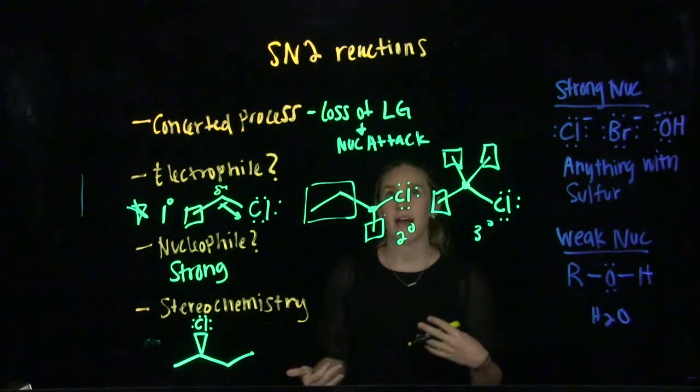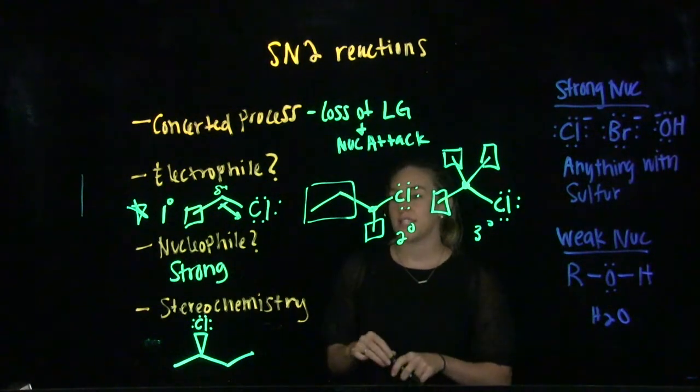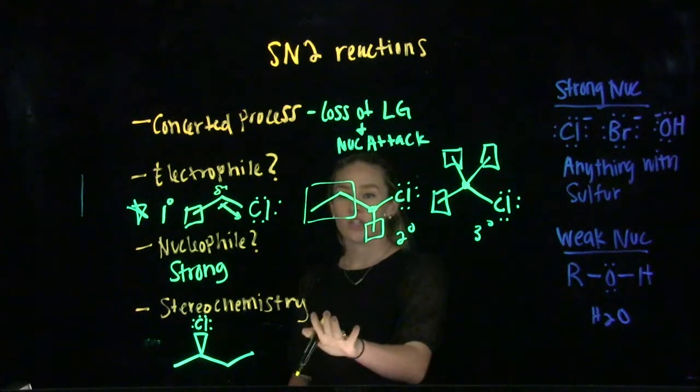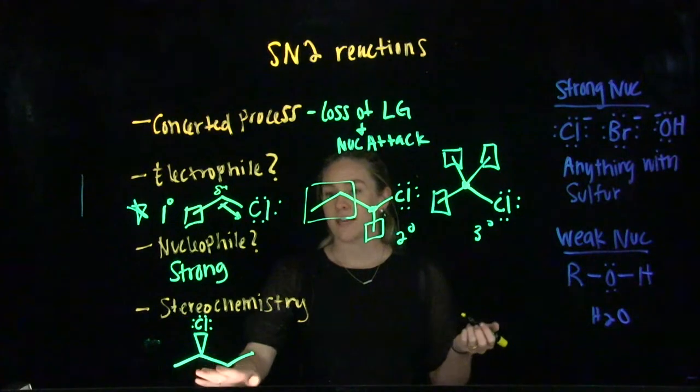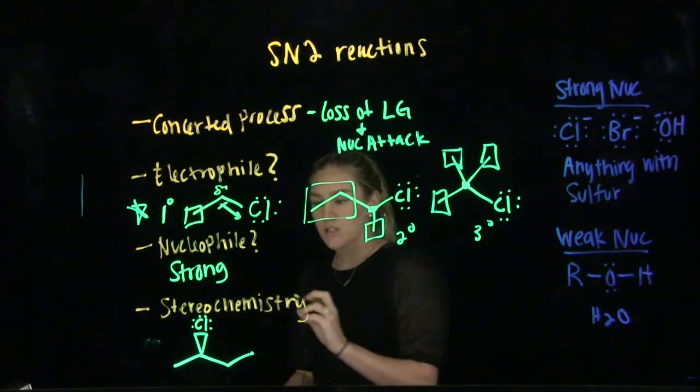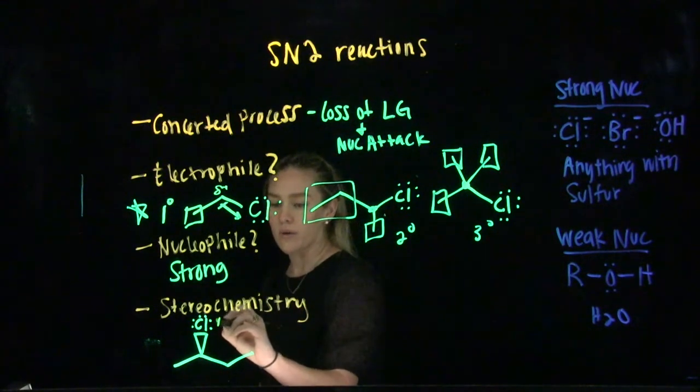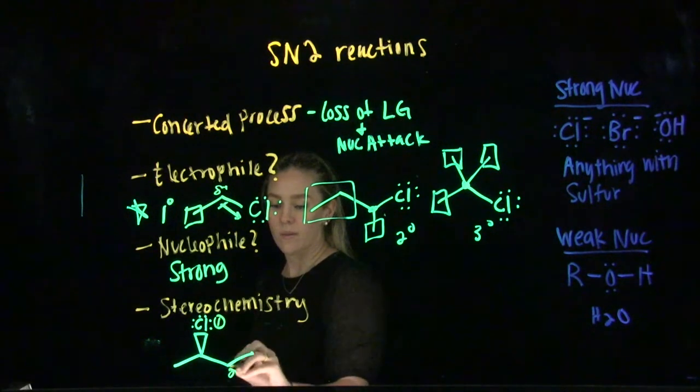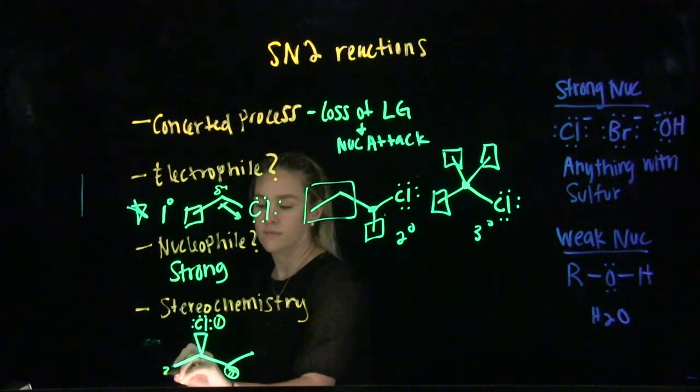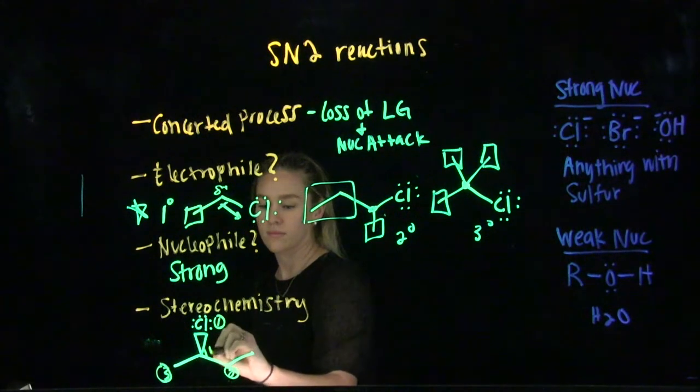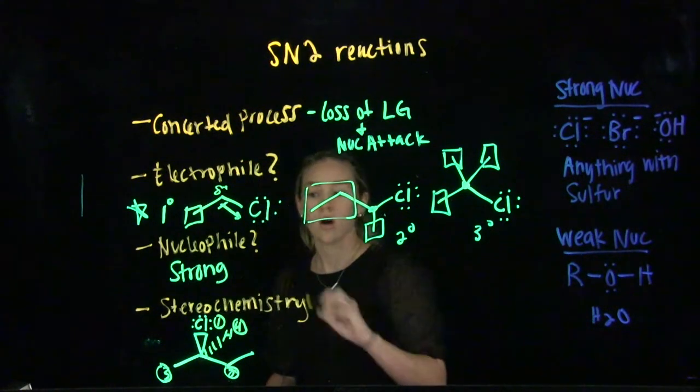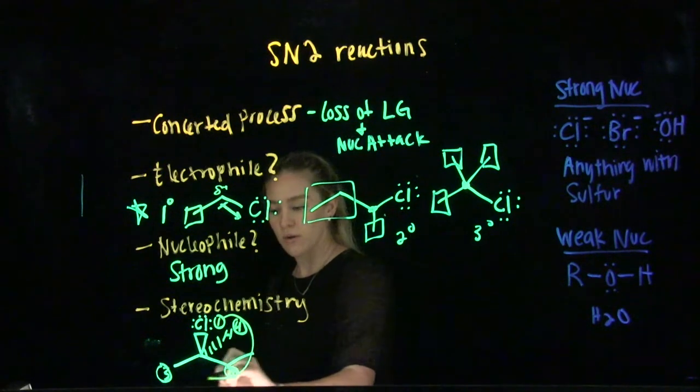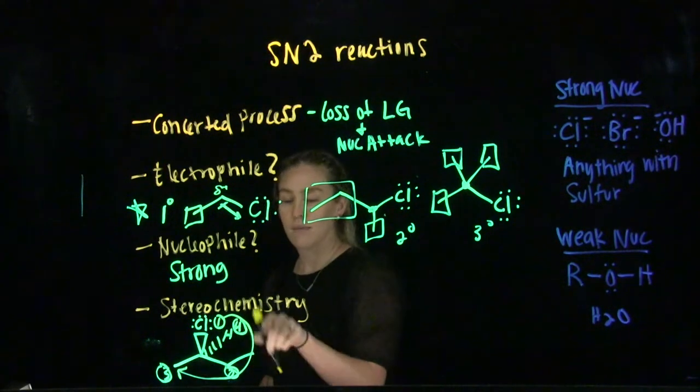The question is, what happens to the stereochemistry as this reaction takes place? The answer to that is that your stereochemistry is going to essentially flip. So let's look at whether this right here is R or S. Our number one priority would be our chlorine. Then we would have our ethyl. Then we would have our methyl. And then we would have our hydrogen back here on number four. When we draw our R and S, we go from one to two to three, making this R.